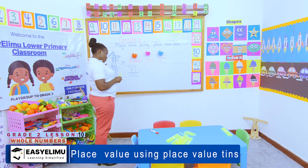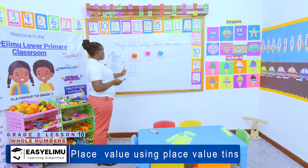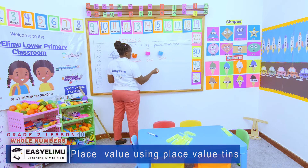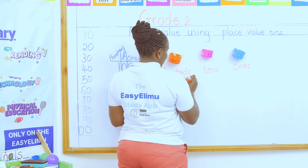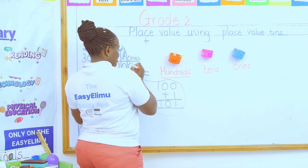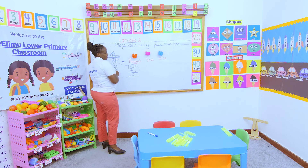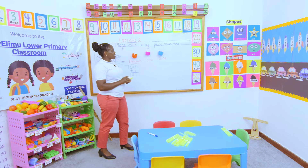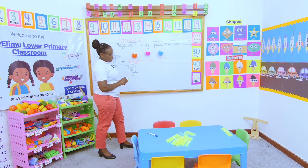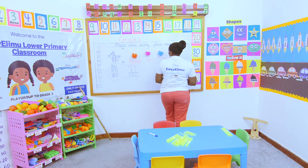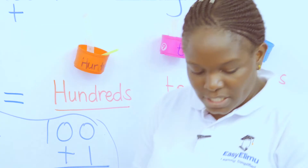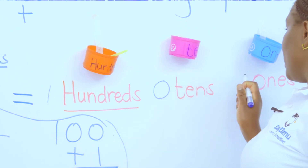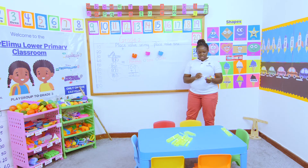When we come to writing numbers in words and figures, this is where we will do more. For today, remember: the place value chart moves to hundreds only when you have three digits. This digit represents ones, this one represents tens, and this one represents hundreds. So 100 equals one hundred, zero tens, and zero ones.